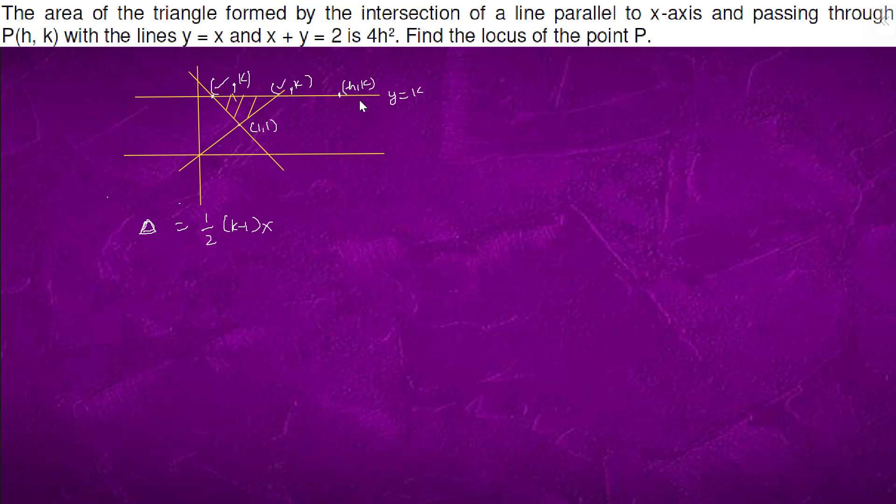So when y equals to k intersects with y equals to x, this point will come out to be k, k. And this will come out to be 2 minus k, k.